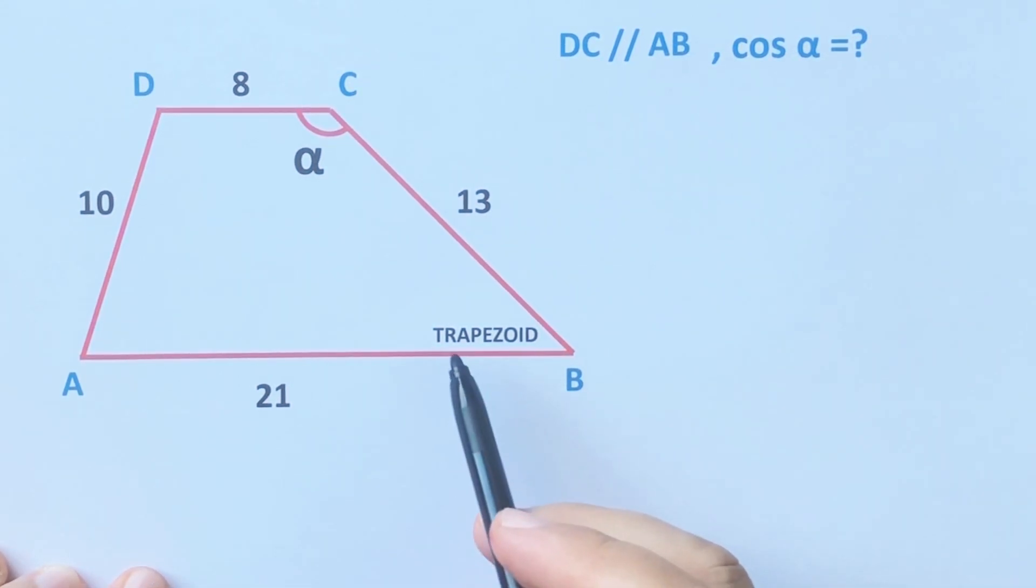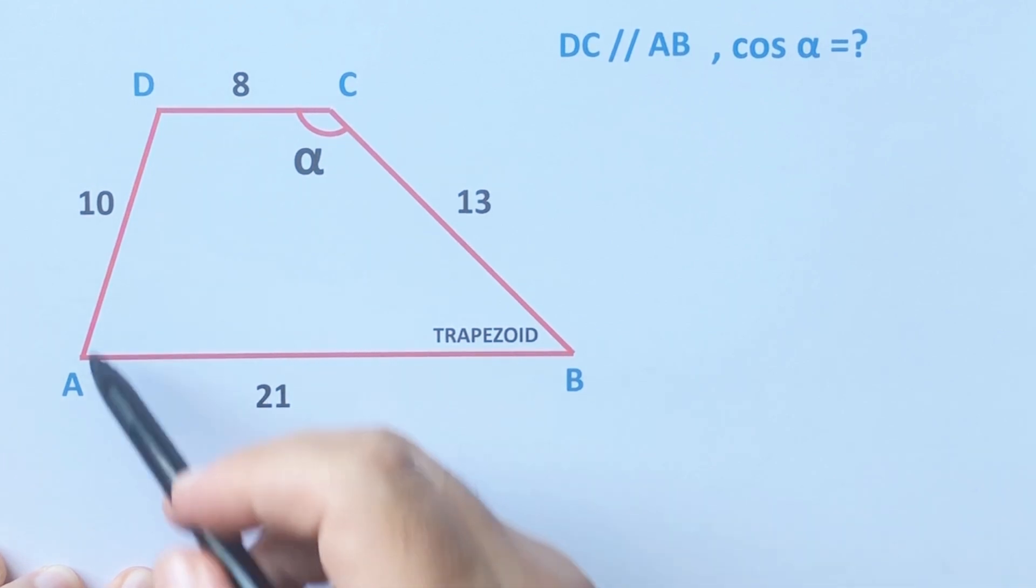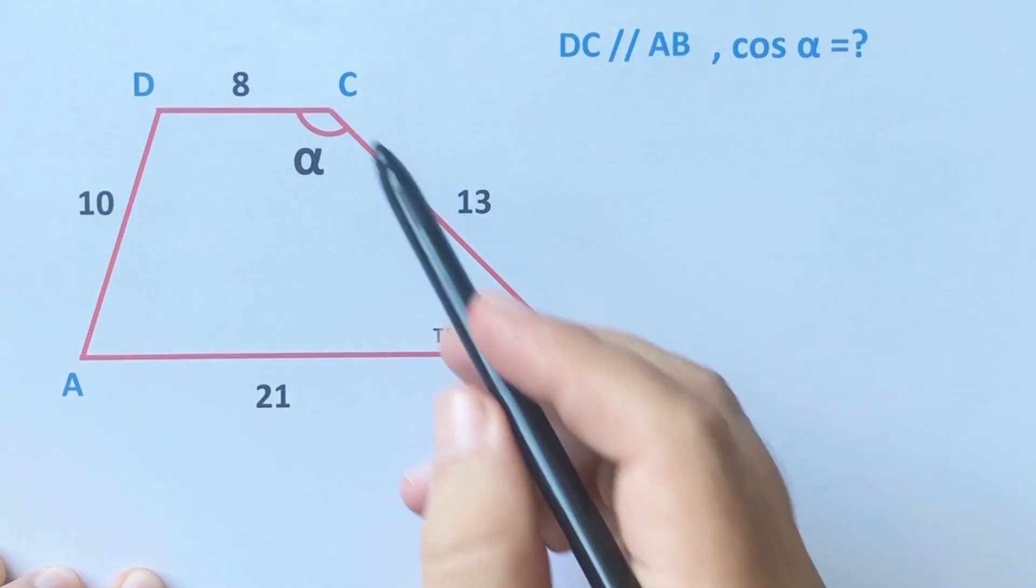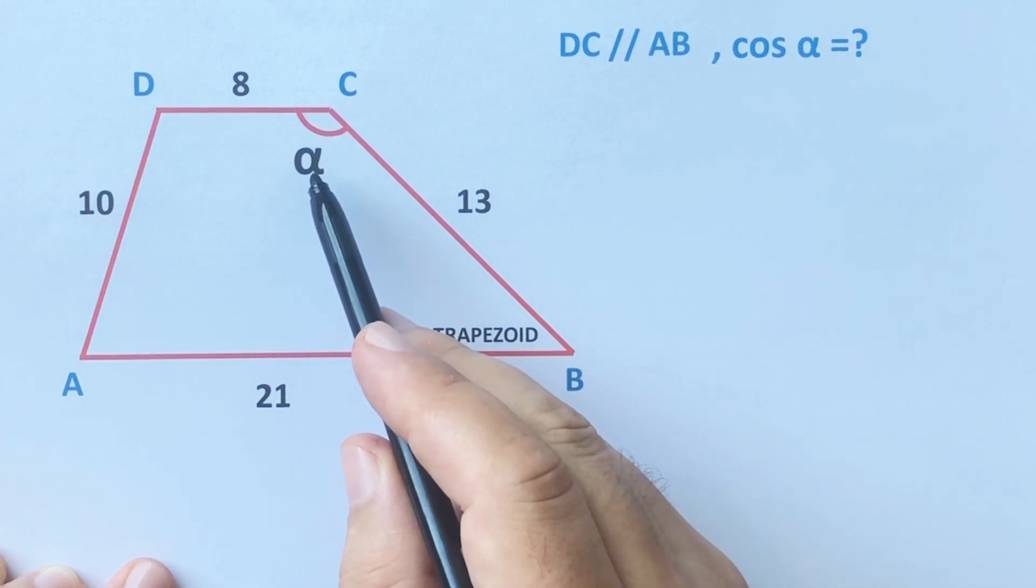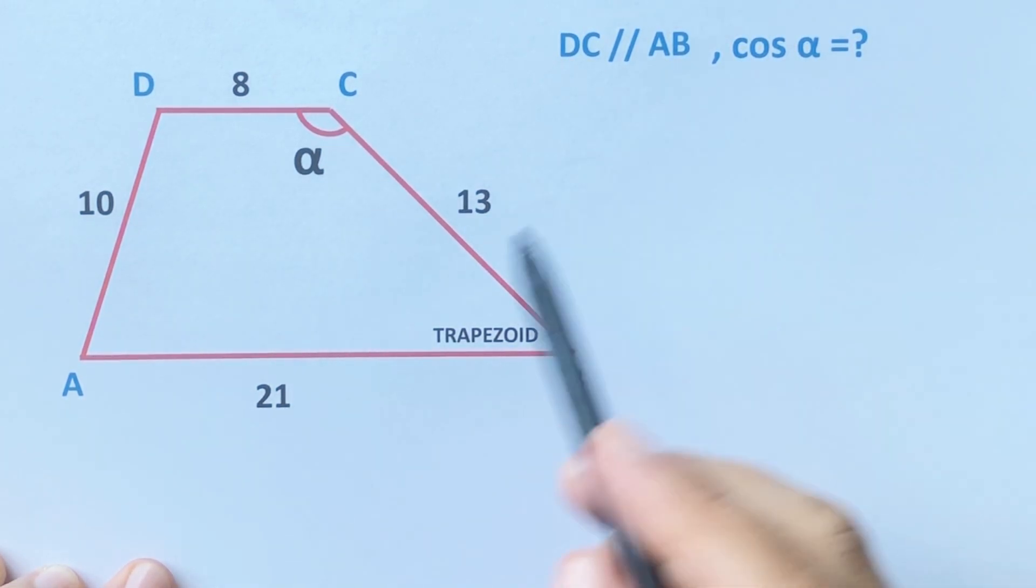Hello everyone, in this video we have one trapezoid. Here is 21, here is 10, here is 8, and this length is 13. And then cosine alpha is asked.